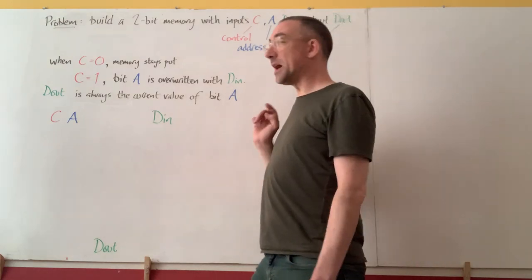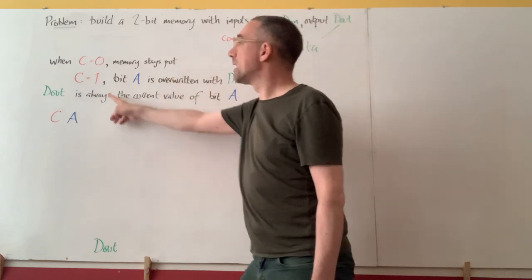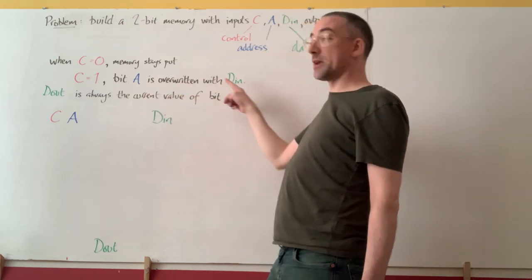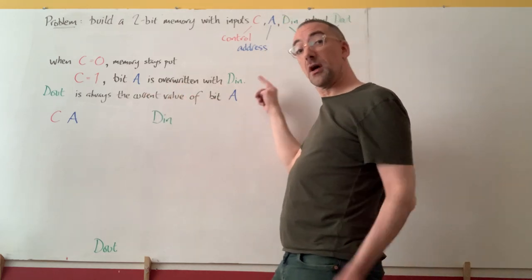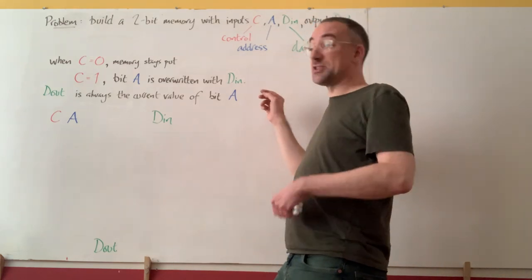So the summary of that is that when C is zero, memory should stay the same, and when C is one, the bit addressed by A should be overwritten with the D_in input, and the rest of memory, the other bit in other words, should stay as it was.